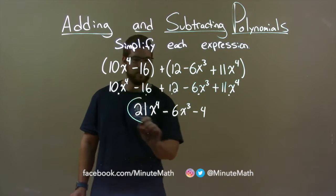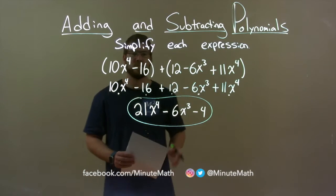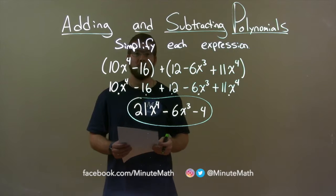Again, my dots. And there we have it. My final answer: 21x to the 4th minus 6x to the 3rd minus 4.